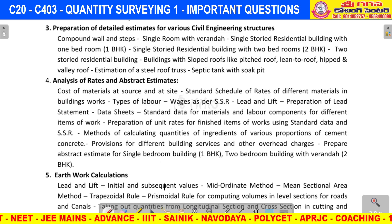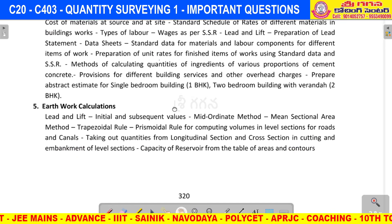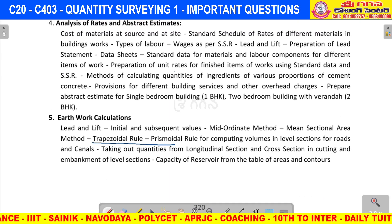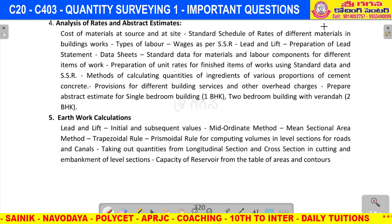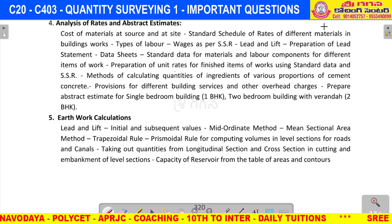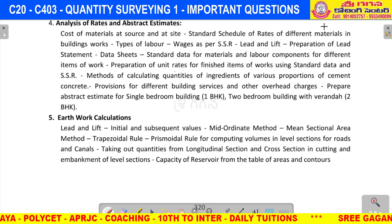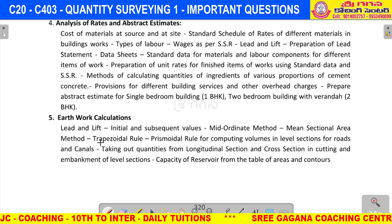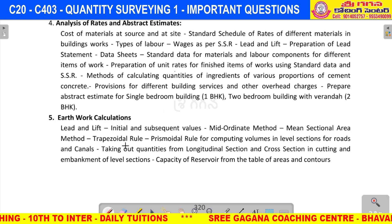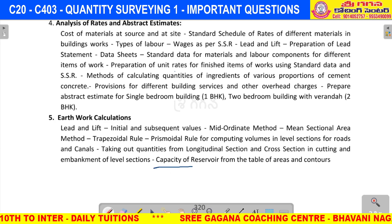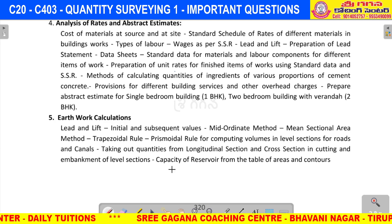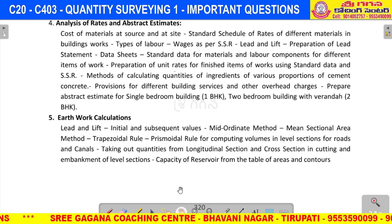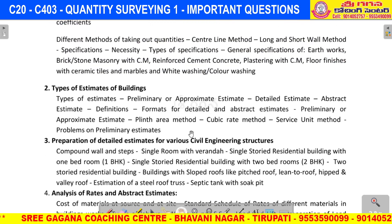The fifth unit is Earthwork Calculation, which is very very easy. There are two rules: the Prismoidal Rule and the Trapezoidal Rule. We calculate the depth of cutting and the depth of filling using these two formulas. Next, we also find out the capacity of a reservoir using these methods.